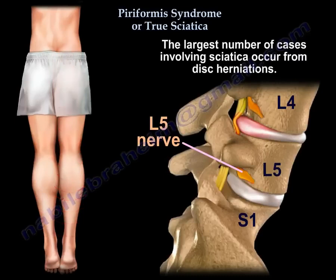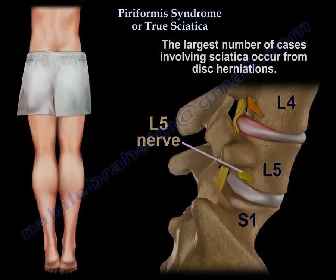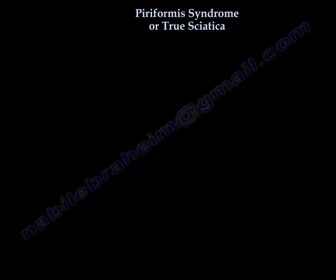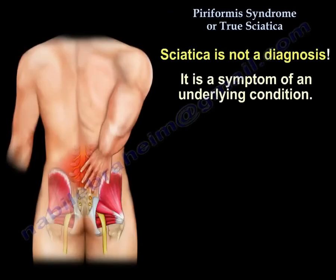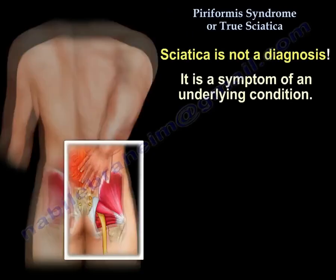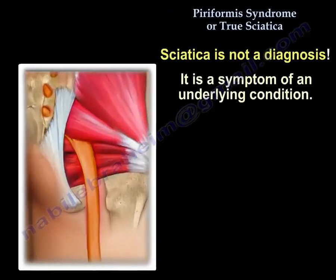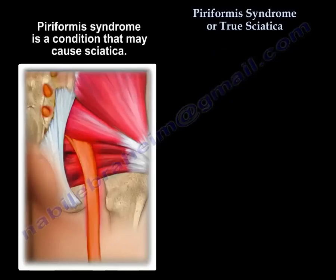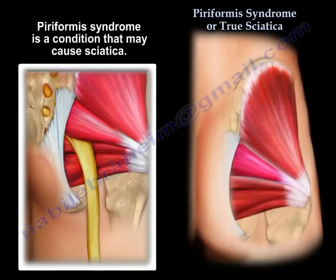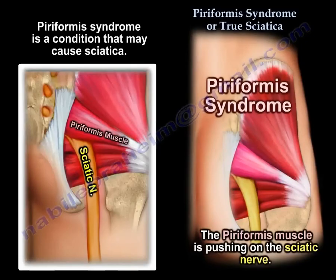The largest number of sciatica cases occur from disc herniation. Sciatica is not a diagnosis — it is a symptom of an underlying condition. For example, in piriformis syndrome, you can have sciatica due to the piriformis muscle pushing on the nerve.